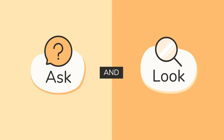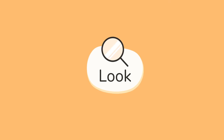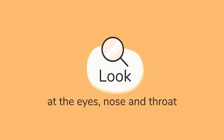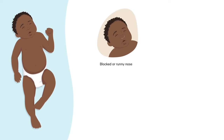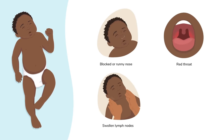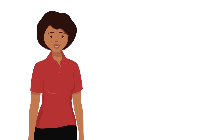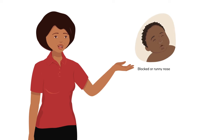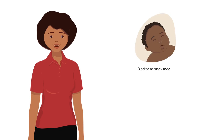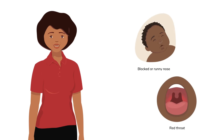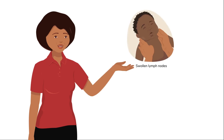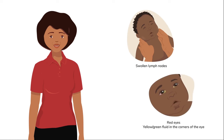But this is not enough to make a good decision. You will also need to look at the child. Start by looking at their eyes, nose, and throat. Symptoms associated with a cough may include a blocked or runny nose, which are often caused by a common cold. This moisture may drip from the nose down the back of the throat, irritating the throat and going into the lungs. Swollen lymph nodes can tell you that there is an infection in the body. When the whites of the eyes are red with yellow or green fluid in the corners, it usually indicates an infection caused either by a bacteria, a virus, or both.